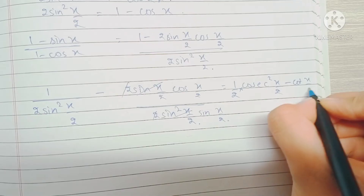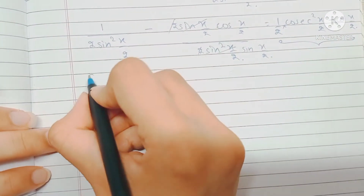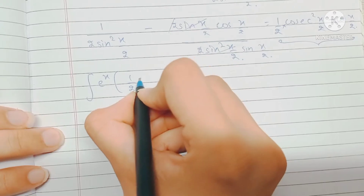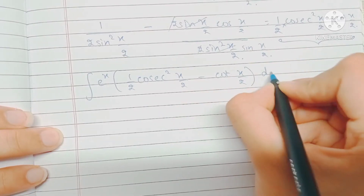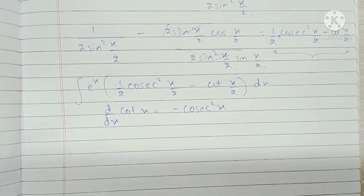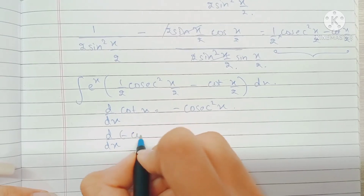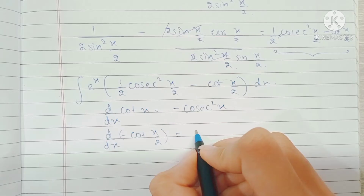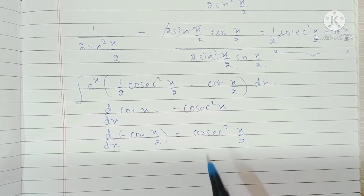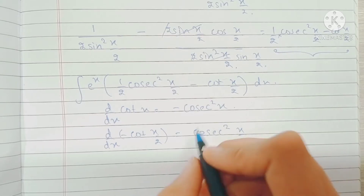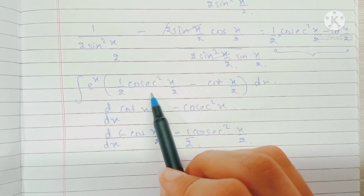So this is what we are going to substitute into our integral: e^x times [(1/2)cosec²(x/2) minus cot(x/2)]. Now, the differentiation of cotx is minus cosec²x, which means the differentiation of minus cot(x/2) would be cosec²(x/2) times (1/2) — exactly what we have in the bracket. This is what's going to help us.